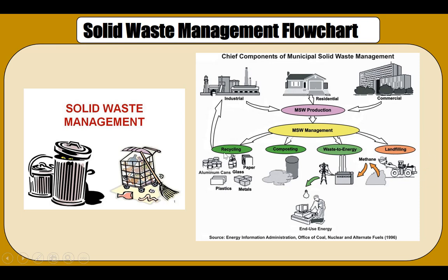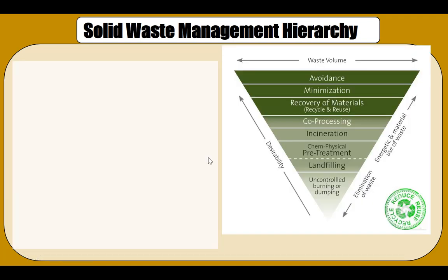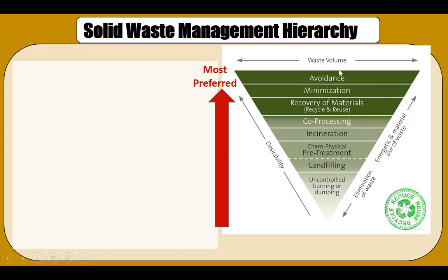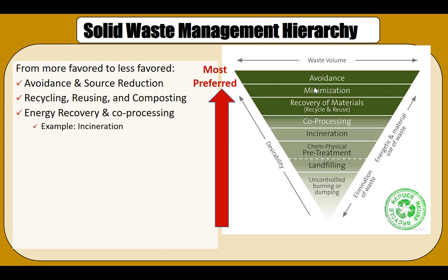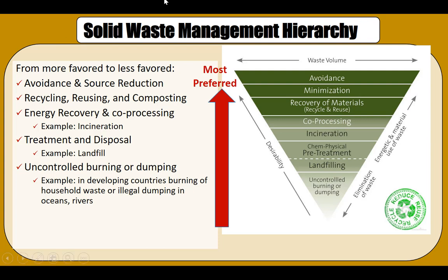According to the US EPA, it is extremely important to produce less waste for landfilling or open dumping, and to find ways to use materials over and over again. The most preferred methods are avoiding or minimizing waste production, and the least preferred is landfilling. We want an inverted pyramid where less waste ends up in landfills and more is diverted through other means. Uncontrolled burning or dumping is typically done in developing countries, not in developed ones.